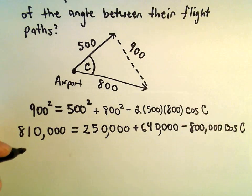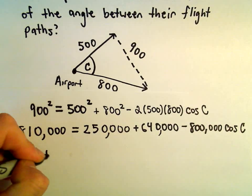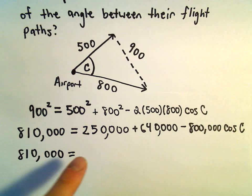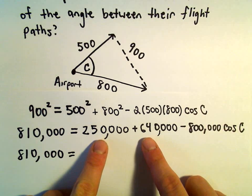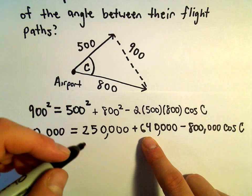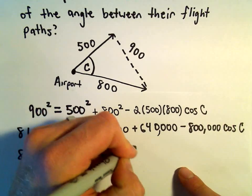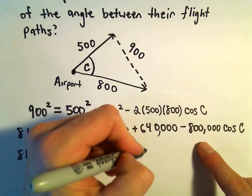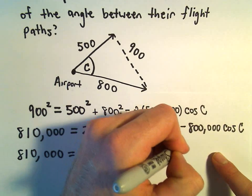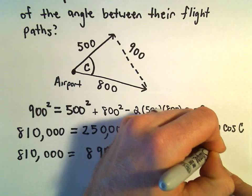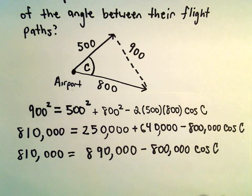And again, now just a little bit of arithmetic. Let's see, so 250,000 plus 640,000, that's going to give us 890,000 minus 800,000 times cosine of C.